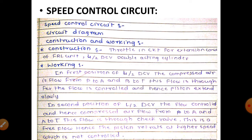Construction of the meter-in circuit for extension consists of an FRL unit, a 4x2 DCB, and a double acting cylinder. In the first position of the 4x2 directional control valve, compressed air flows from P to A and B to T. This flow passes through the flow control valve; the flow is controlled and hence the piston extends slowly. In the second position, compressed air flows from P to B and A to T through the check valve — this is a free flow — and hence the piston rod retracts at higher speed, which is not controlled.